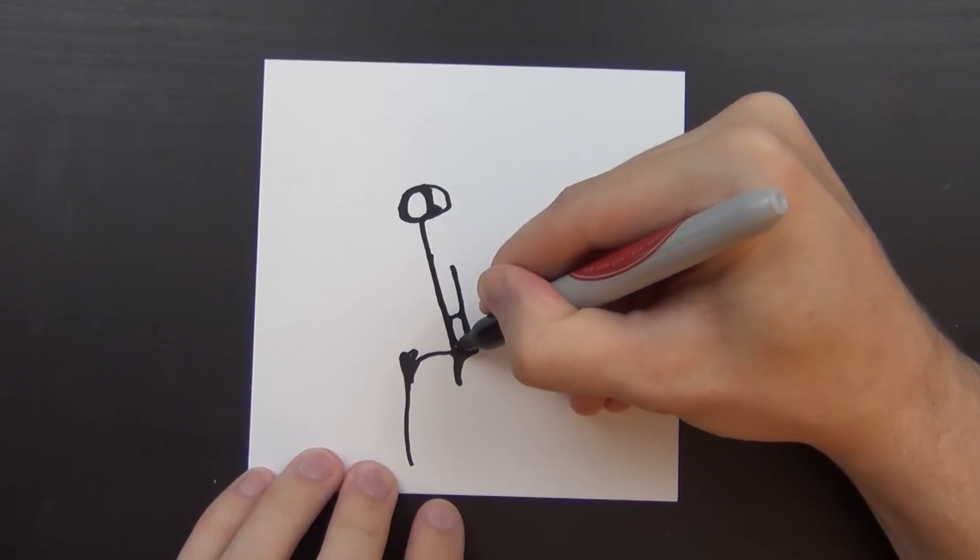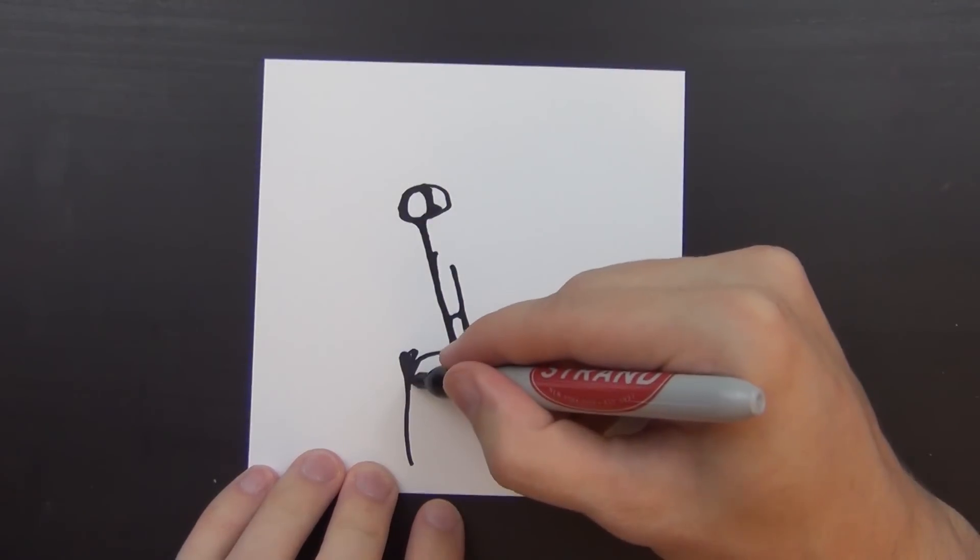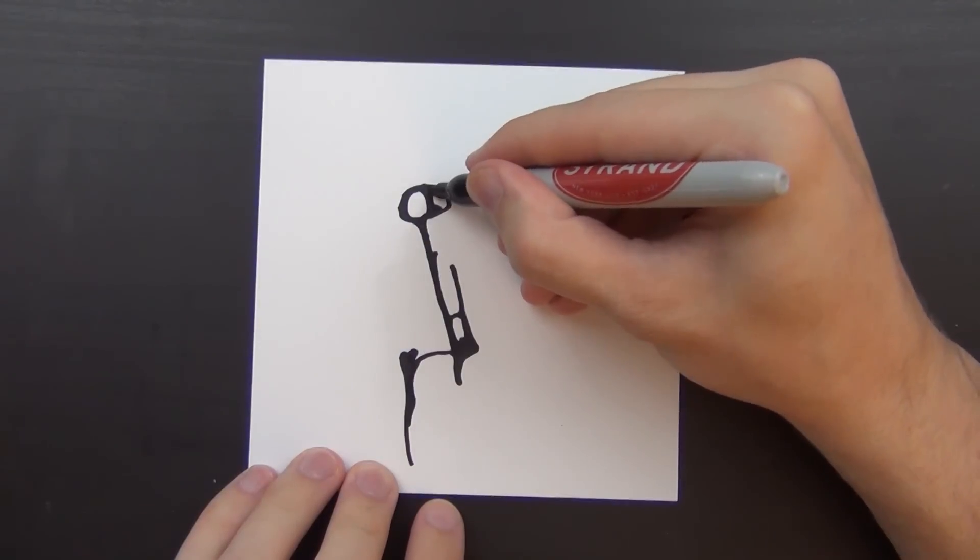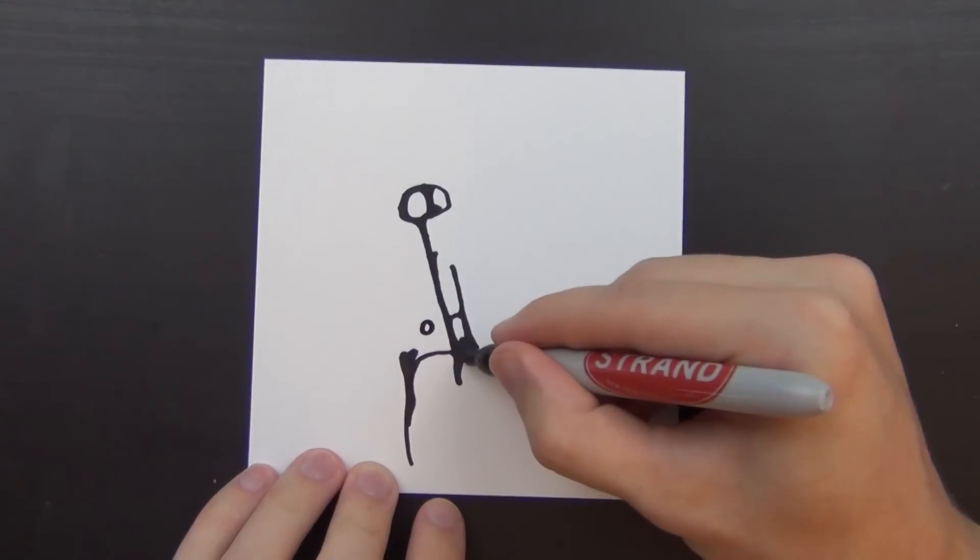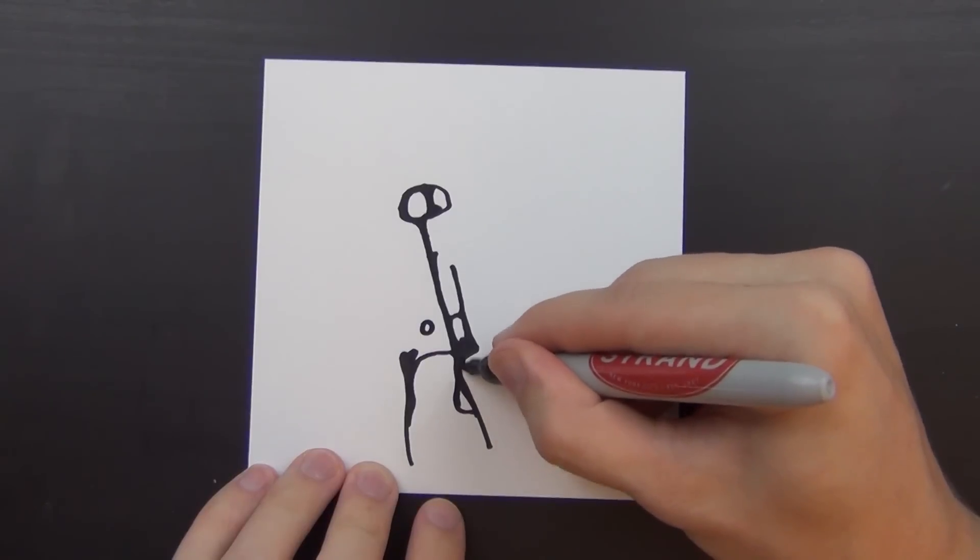So what you want to do is grab a piece of paper and a couple of art supplies of your choice. The simpler, the better. Just keep it simple, straightforward. I chose a Sharpie and a Crayola marker here. I chose a red one, and then just begin drawing some lines.